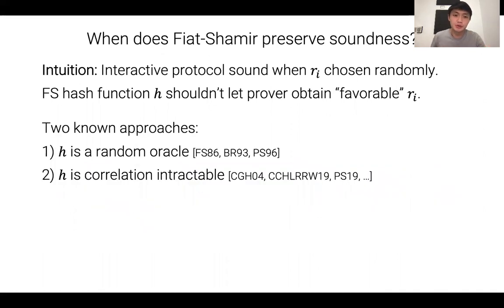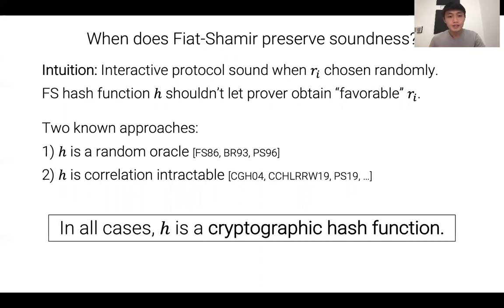There are basically two known approaches for giving positive results for Fiat-Shamir. One is to treat the hash function H as a random oracle — you can show that in most cases, if H is a random oracle, Fiat-Shamir is in fact sound. More recently, there's an exciting line of work showing Fiat-Shamir compilation in the standard model, showing that when the hash function satisfies a property known as correlation intractability, many interesting Fiat-Shamir compilations work. In all these cases, H is a cryptographic hash function with some computational hardness.